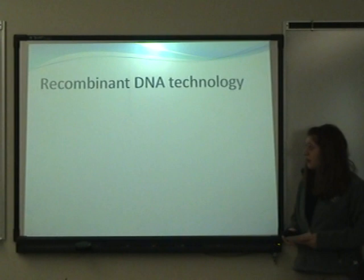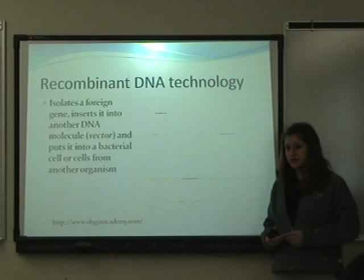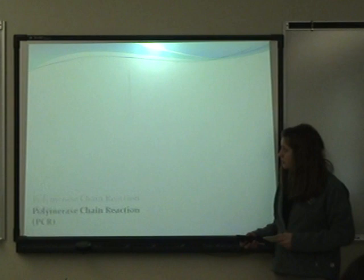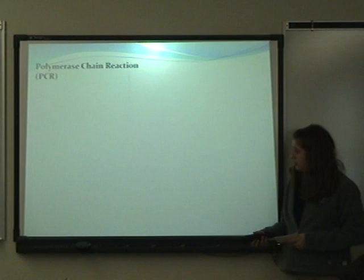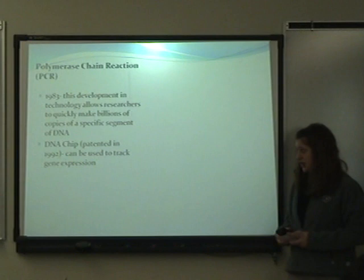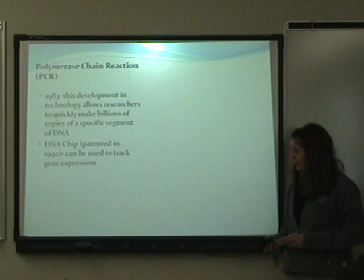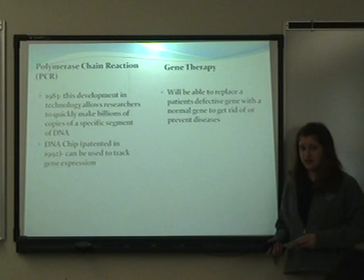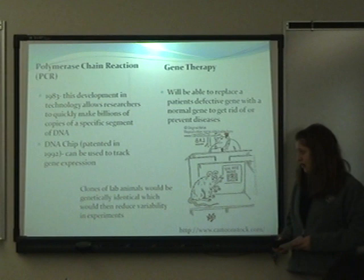Recombinant DNA technology isolates a foreign gene, inserts it into another DNA molecule — otherwise known as a vector — and puts it into a bacterial cell or cells from another organism. Polymerase chain reaction was created in 1983, allowing researchers to make millions of copies of specific segments of DNA. The DNA chip, also part of PCR and patented in 1992, can be used to track gene expression. Gene therapy will be able to replace a patient's defective gene with a normal gene to eliminate or prevent different diseases. Clones of lab animals will be genetically identical, which would reduce variability in experiments.